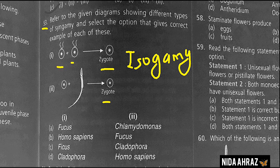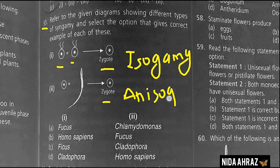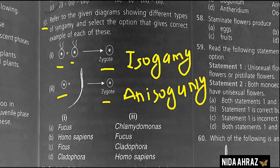In humans, anisogamy is observed, which involves the fusion of gametes that differ in size or motility, as seen in figure two. The common type of anisogamy is oogamy, which involves fusion of large immotile female gametes and small motile male gametes. According to this, option D is the correct choice: Cladophora and Homo sapiens.